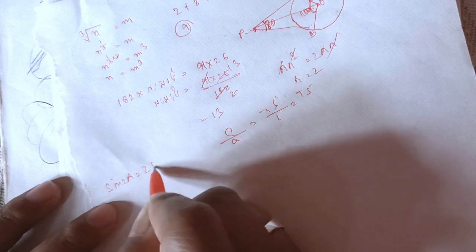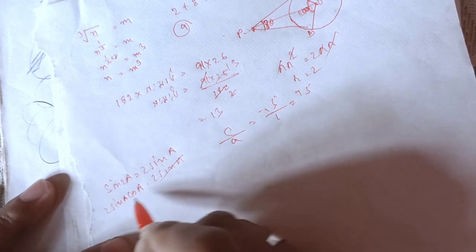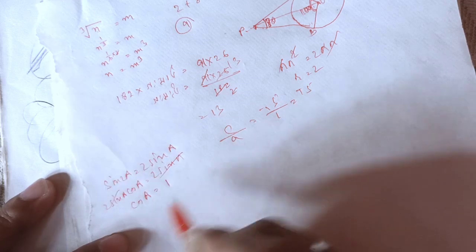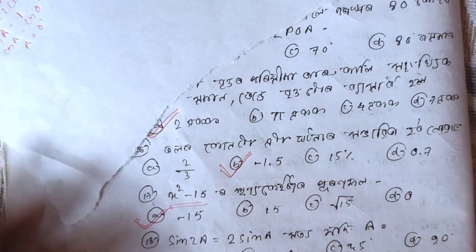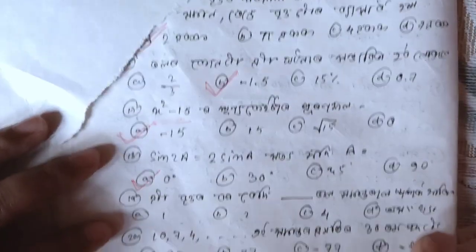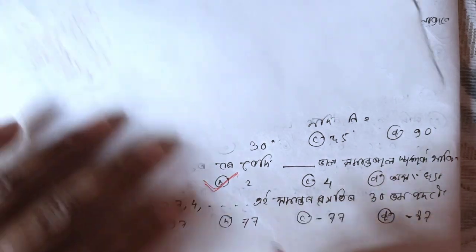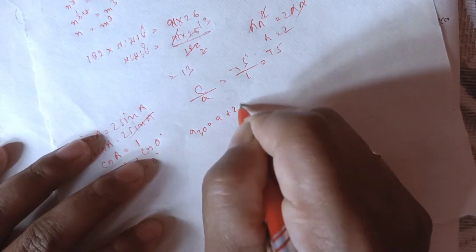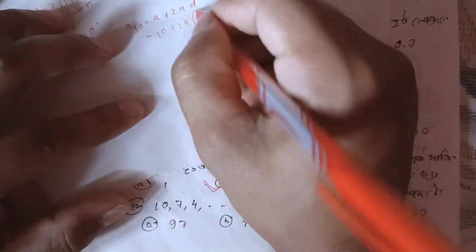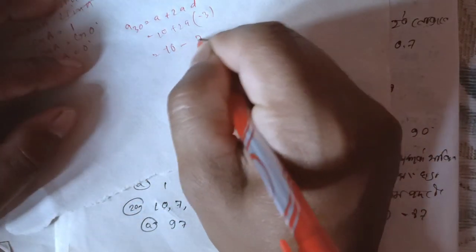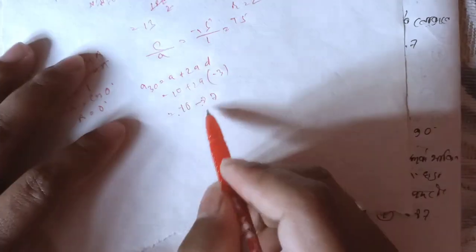Sin 2a equals sin a, meaning 2 sin a cos a equals sin a. Cancel cos, so cos a equals sin a, giving a single point of sin a, more than 2 and 3. Minus 3, minus 3, minus 77, minus 7 — if I add minus 7, I allow us to have minus 7.